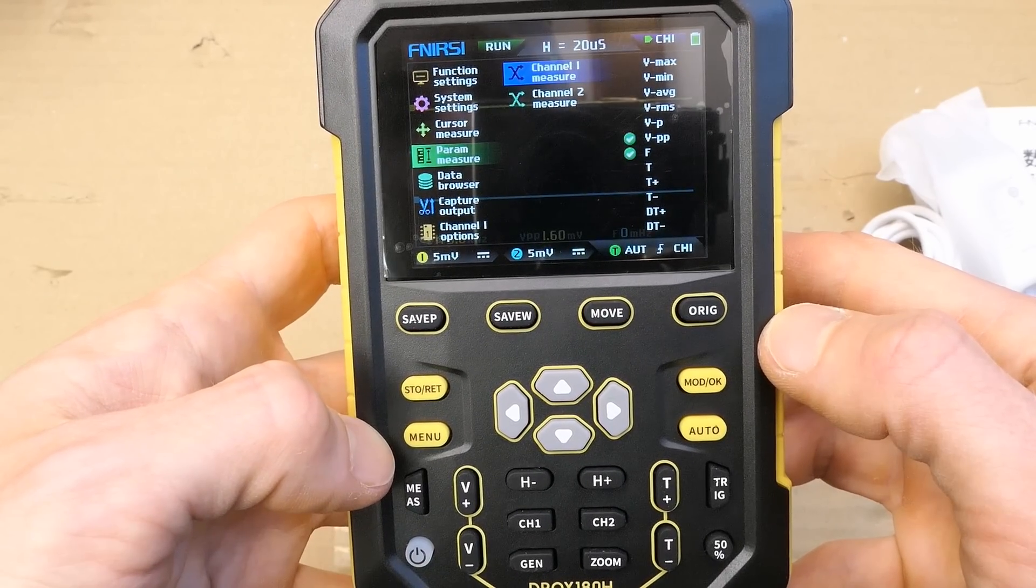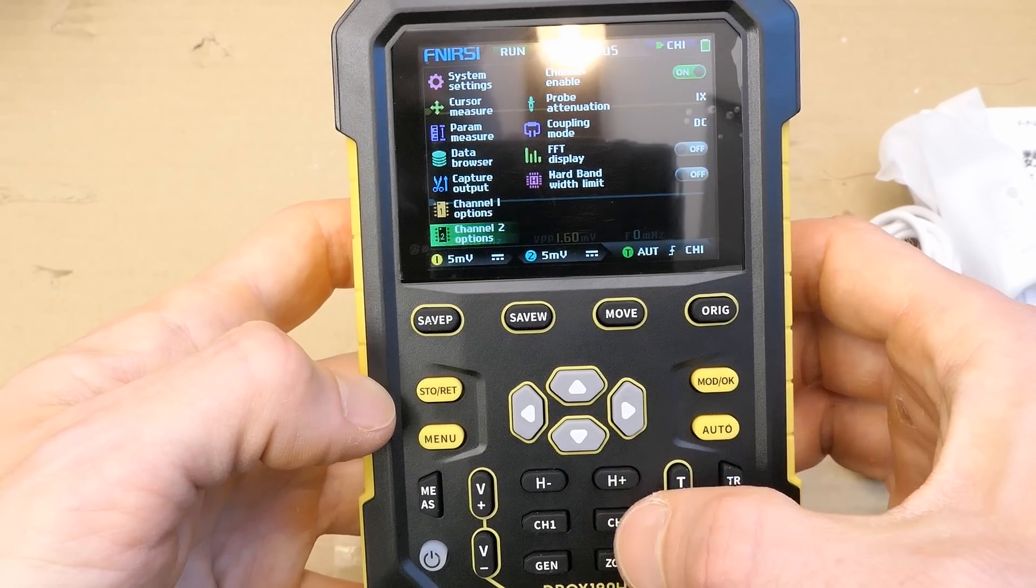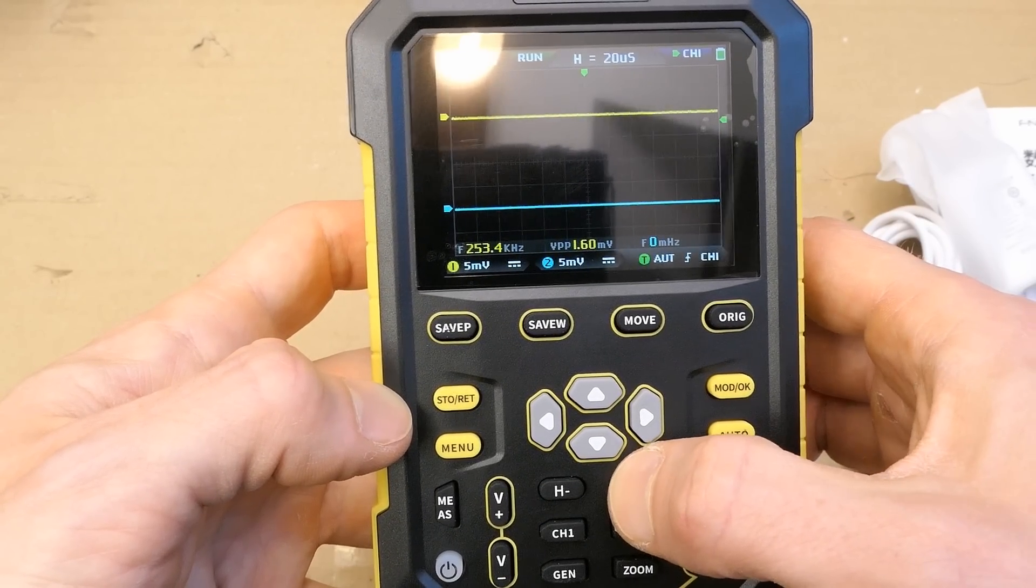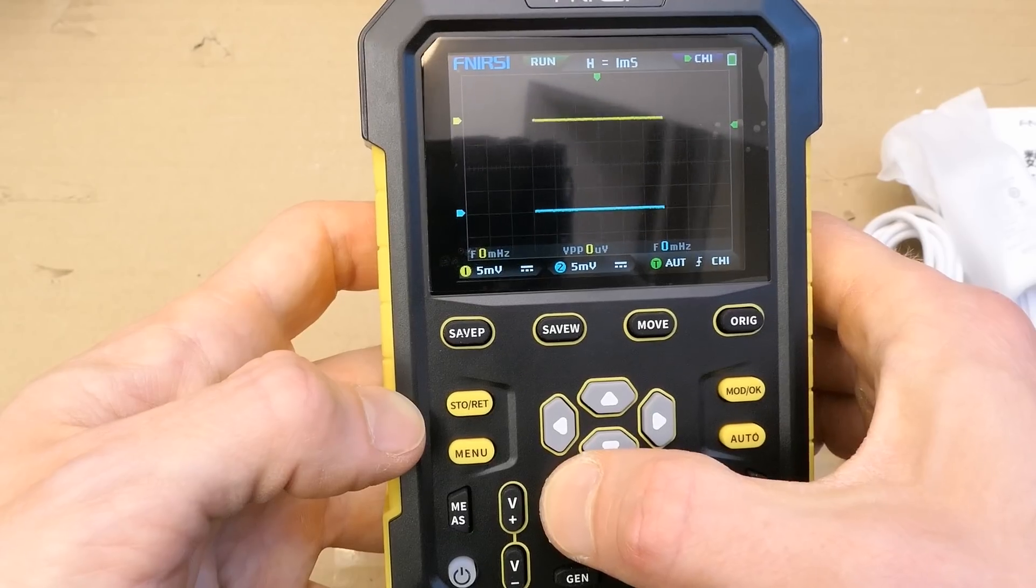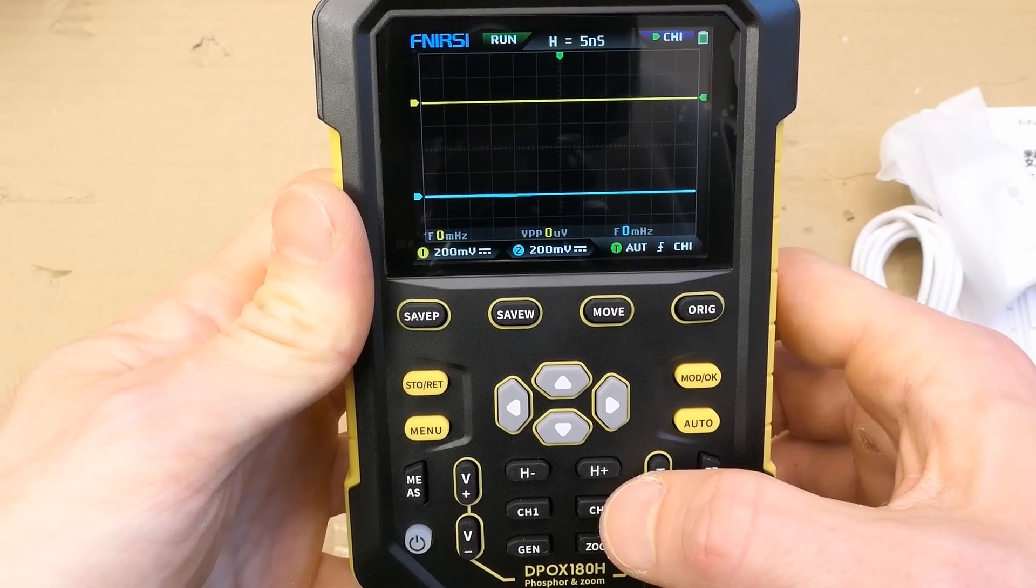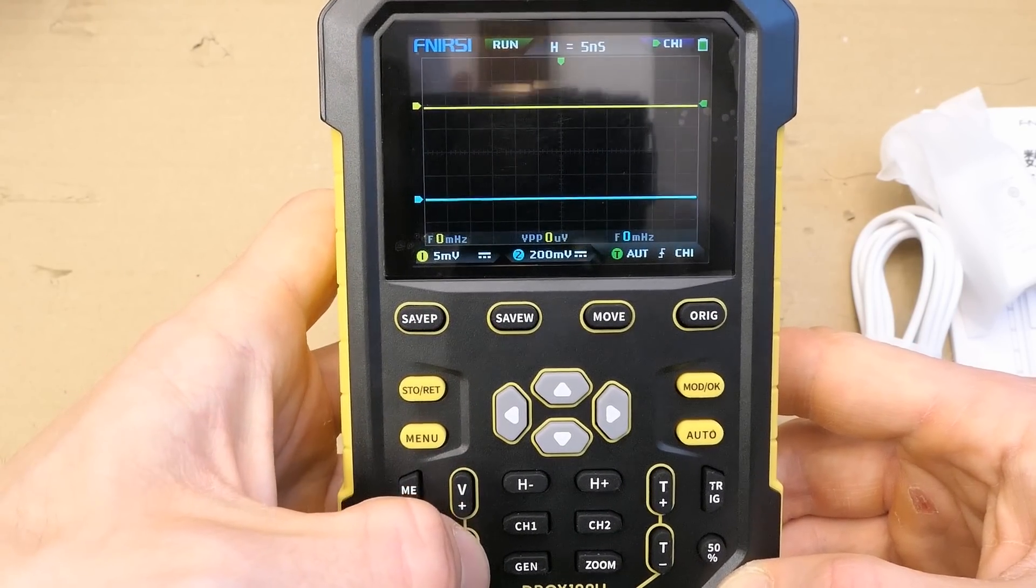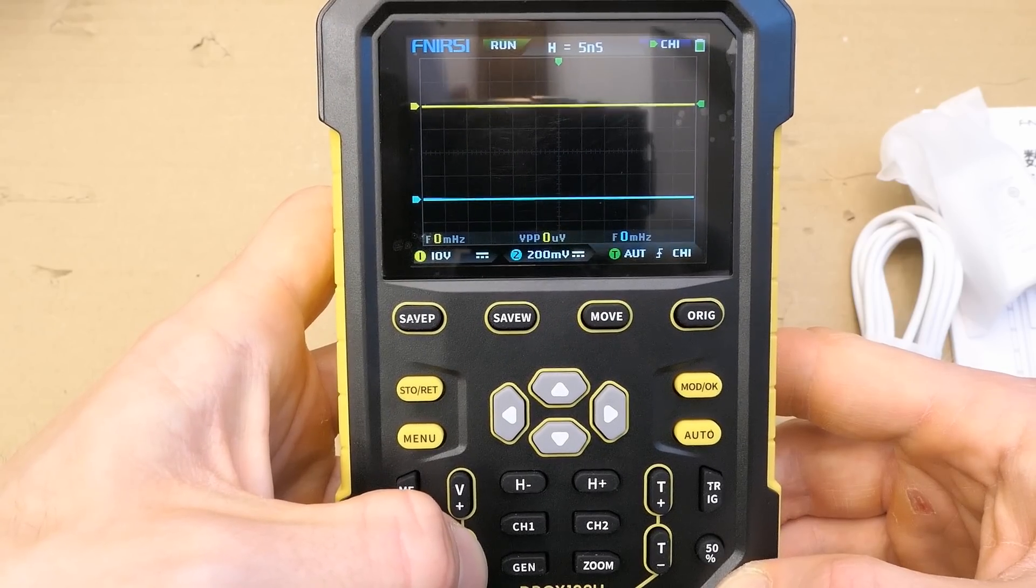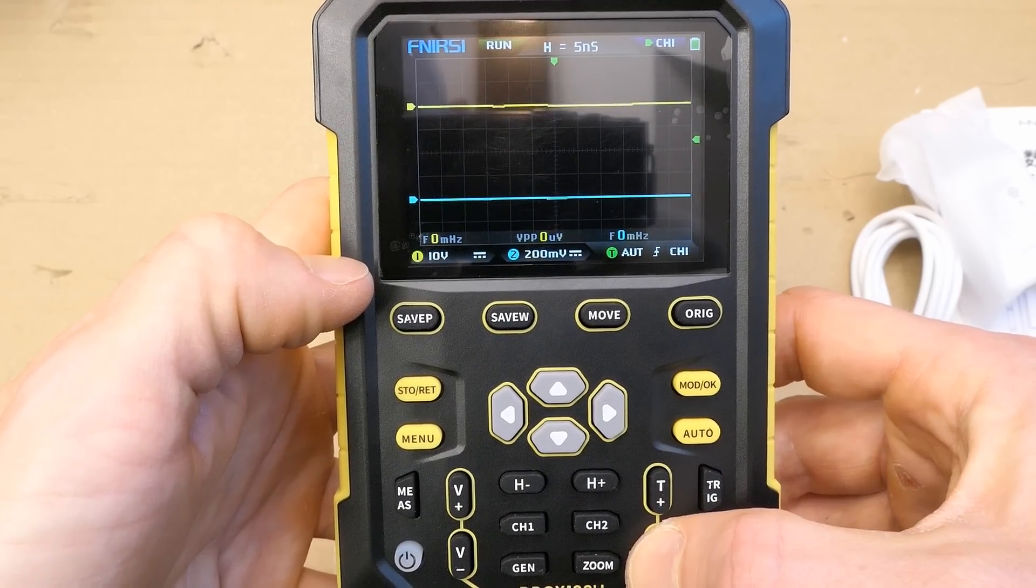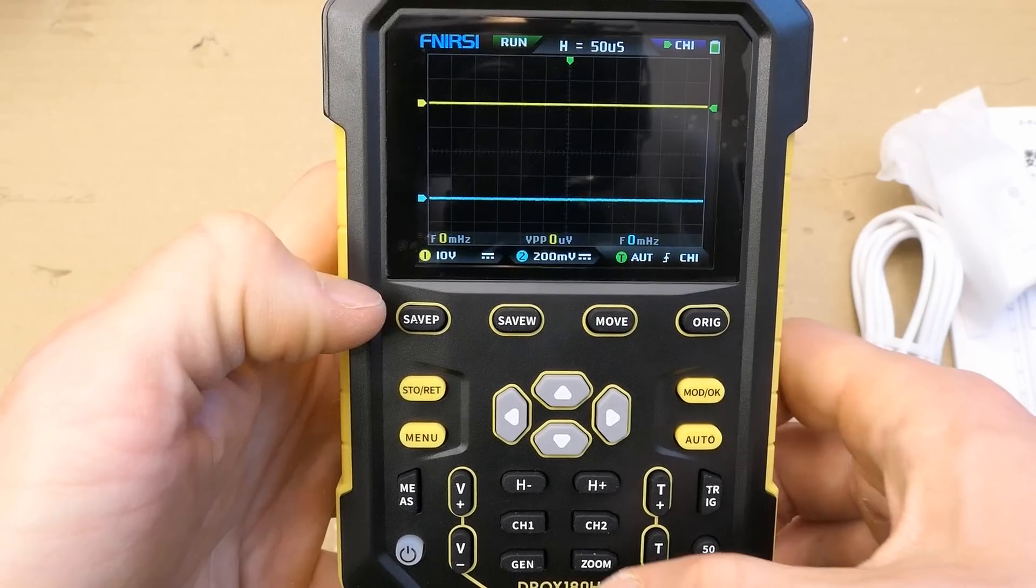Measurement, here you access the measurement settings, the trigger settings, the channel 2 settings, channel 1 settings, H plus, H minus, is changing the time base, and 5 nanosecond, this per division is the fastest, here you change the voltage per division, 5 millivolts, the highest sensitivity, and 10 volts is the lowest sensitivity, here is the trigger level, which you can move, you can assess it to 50%, there is a zoom.